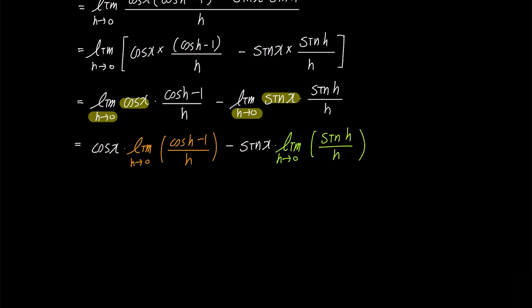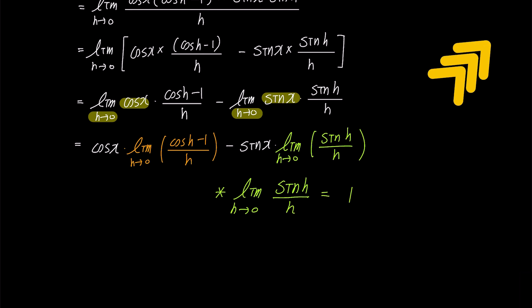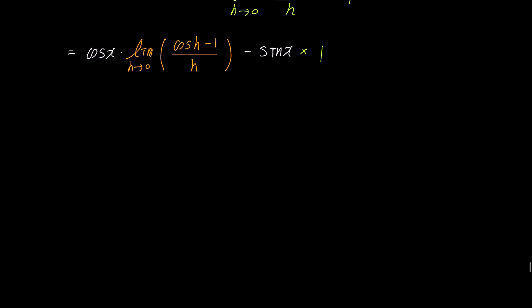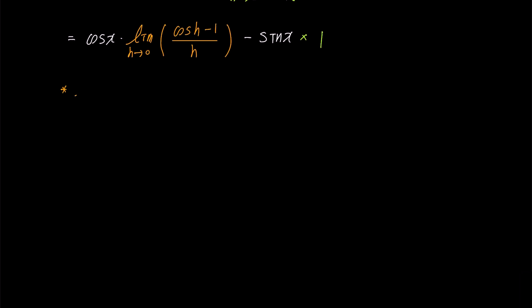If we know the values of the limits indicated in orange and green, we can determine the derivative of cosine x. In a previous video, I explained in detail why the limit of sine h over h becomes 1 using a diagram. If you are curious, please click on the link in the top right corner to learn about it first. Since the green expression becomes 1, we can simplify further to cosine x times the limit of cosine h minus 1 over h, minus sine x times 1.